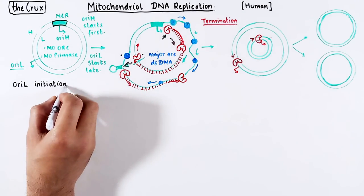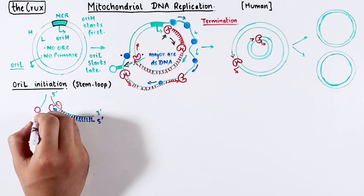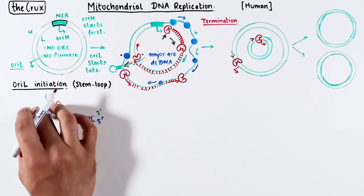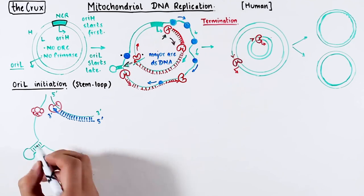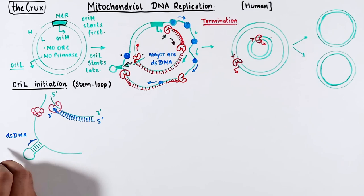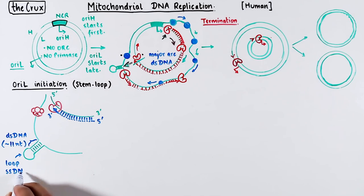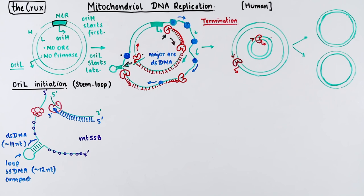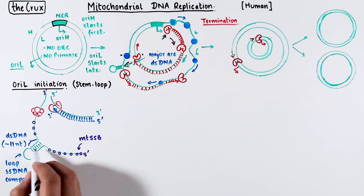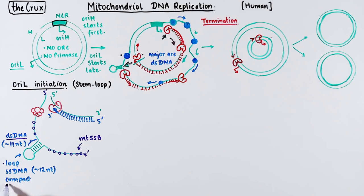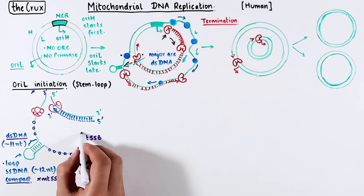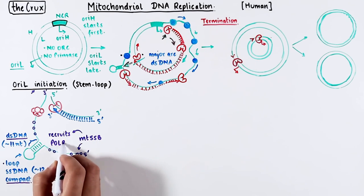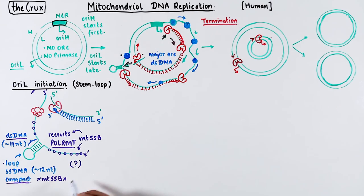This starts OriL initiation through the stem-loop structure. When Twinkle unwinds the OriL region, the single-stranded DNA takes on a stem-loop structure — the double-stranded stem is about 11 nucleotides and the loop is 12 nucleotides. The rest of the single-stranded DNA is bound by SSB proteins, but SSBs cannot bind the double-stranded stem, and the loop is too compact — SSB needs at least 15 to 20 nucleotides to bind. The initiation at this loop starts when SSBs recruit RNA polymerase to this location, though how this recruitment occurs is unclear.